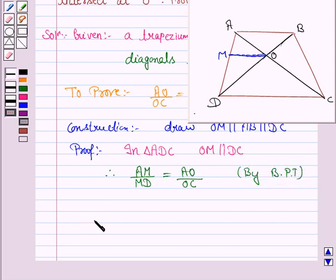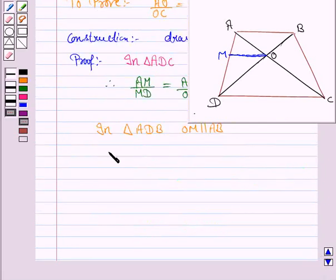Now, in triangle ADB, OM is parallel to AB by construction, so again by BPT, AM upon MD is equal to BO upon OD.